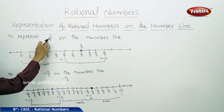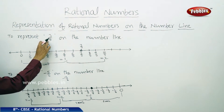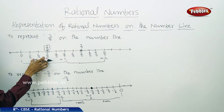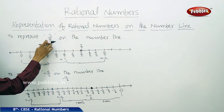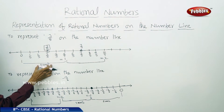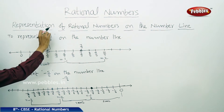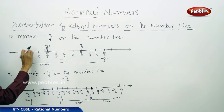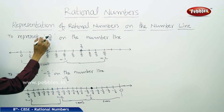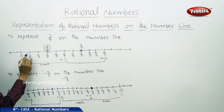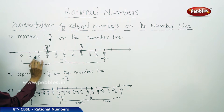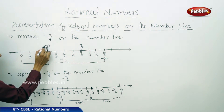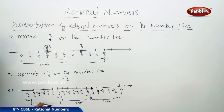The denominator tells us how many equal parts a unit is divided into. If the denominator is 5, every unit is divided into 5 equal parts. The numerator 3 tells us how many of those equal parts we are considering. So out of 5 equal parts, we consider the third part, and this rational number is represented by 3 by 5.